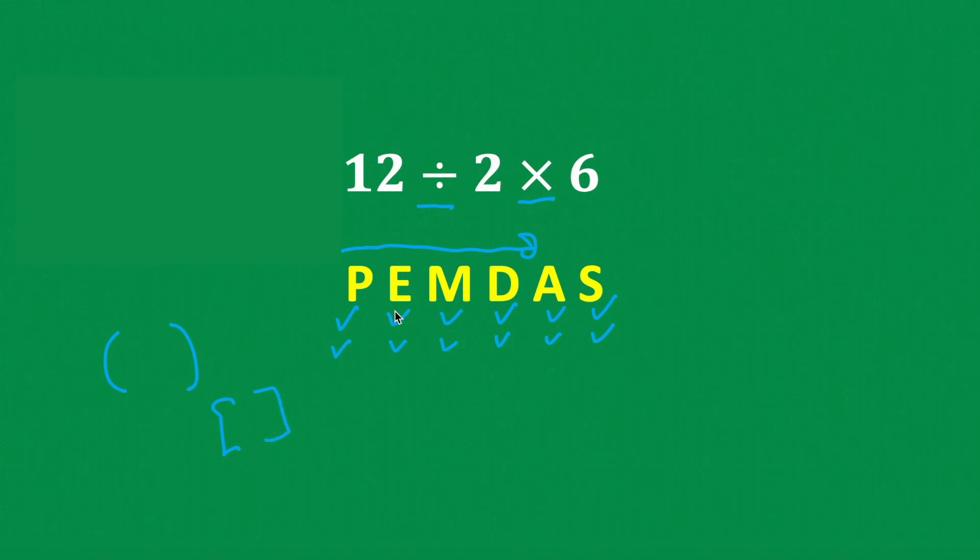And then next up would be exponents, meaning something like 2 to the third. Where here, 2 is known as the base, and 3 would be considered the exponent. And then finally, multiplication and division, addition and subtraction.